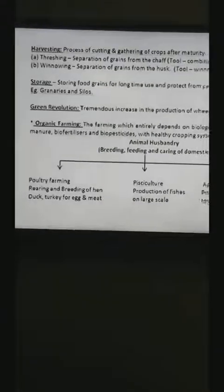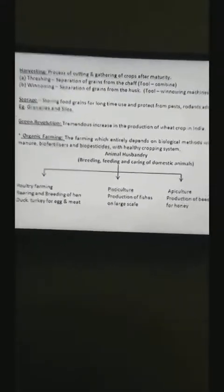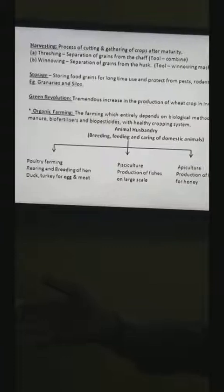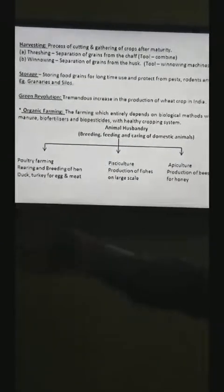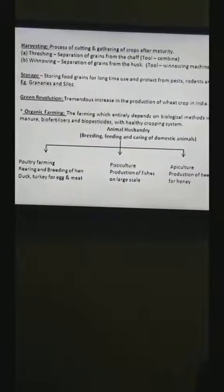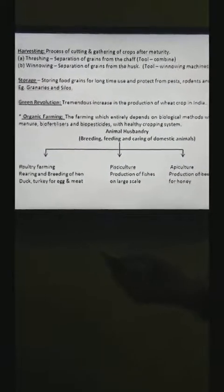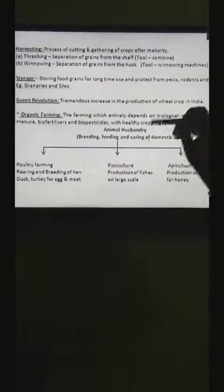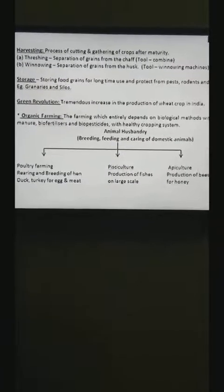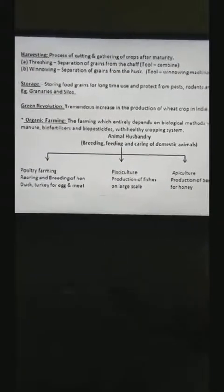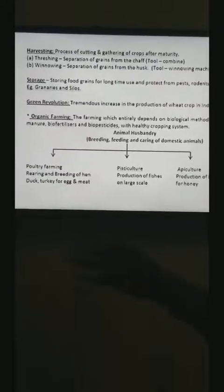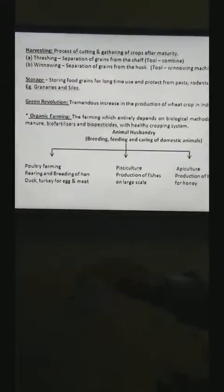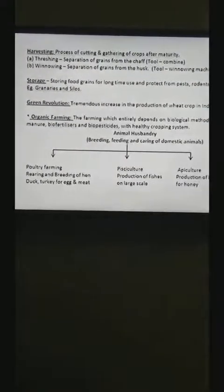The next step is storage. Proper storage of food grains is necessary to get regular supply of the products throughout the year. And it should protect the food grains and other agricultural products from pests, rodents and other microbes. On a commercial scale, food grains are stored in gunny bags in granaries or in tall cylindrical silos.